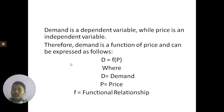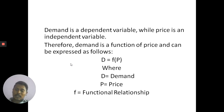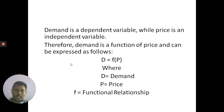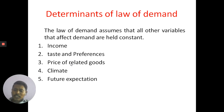In the analysis of the law of demand, two important variables are demand and price. Demand is the dependent variable and price is the independent variable — price influences demand. Therefore, demand is a function of price, expressed formally as D = F(P), where D means demand, P means price, and F means functional relationship.